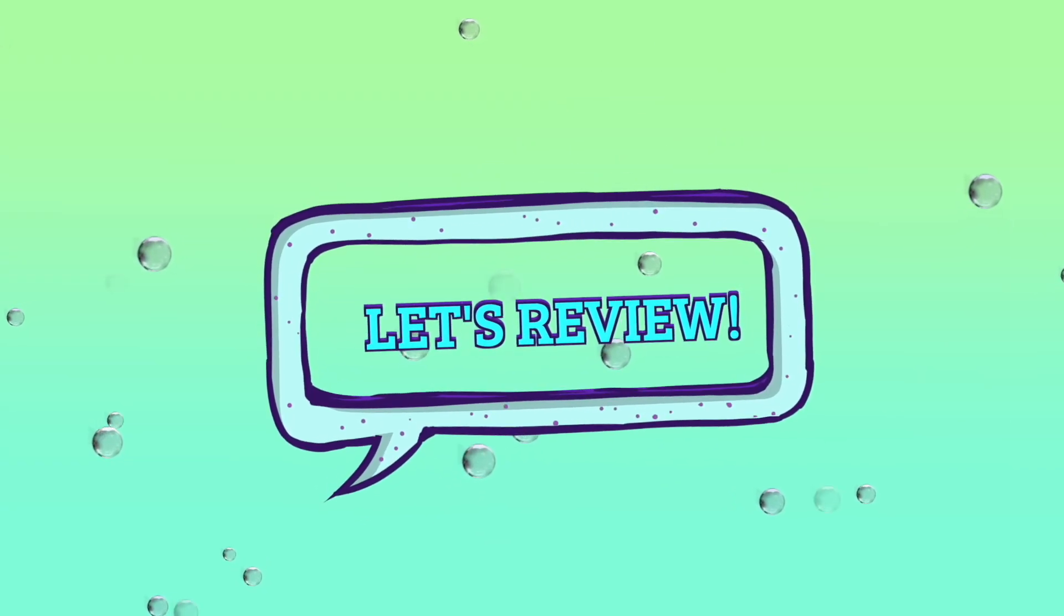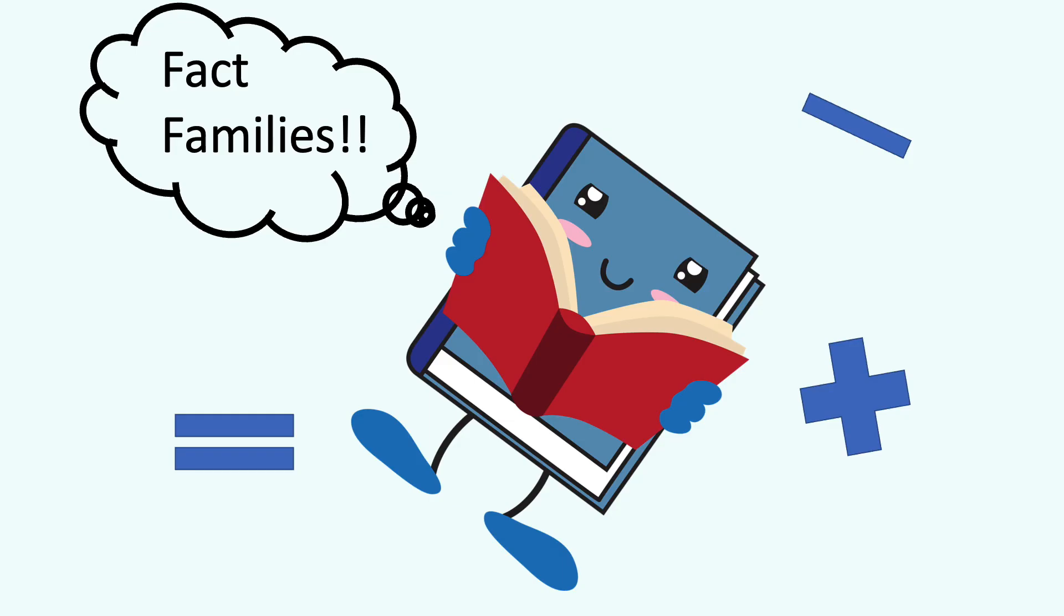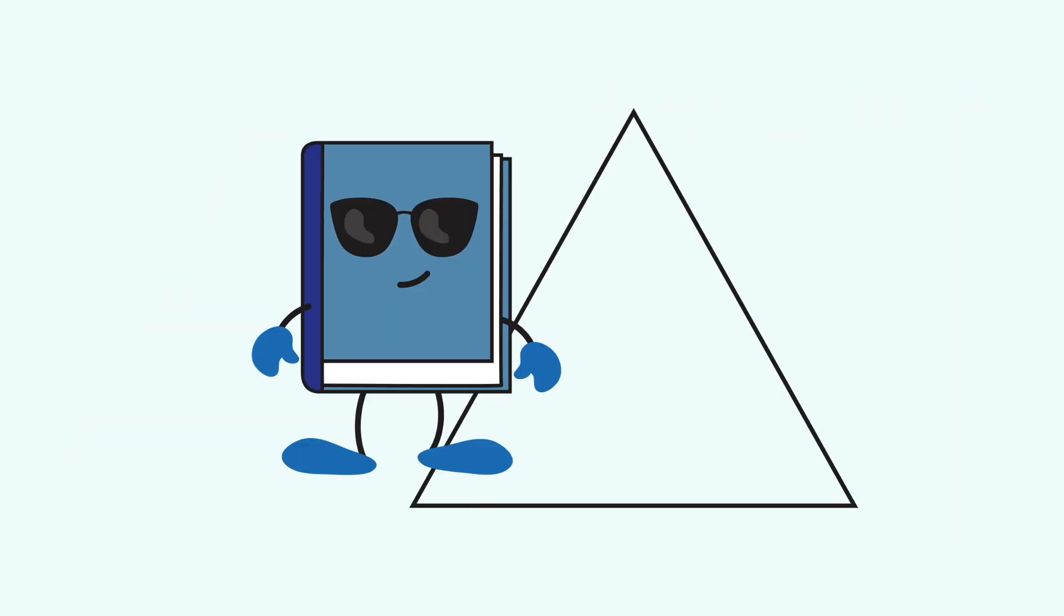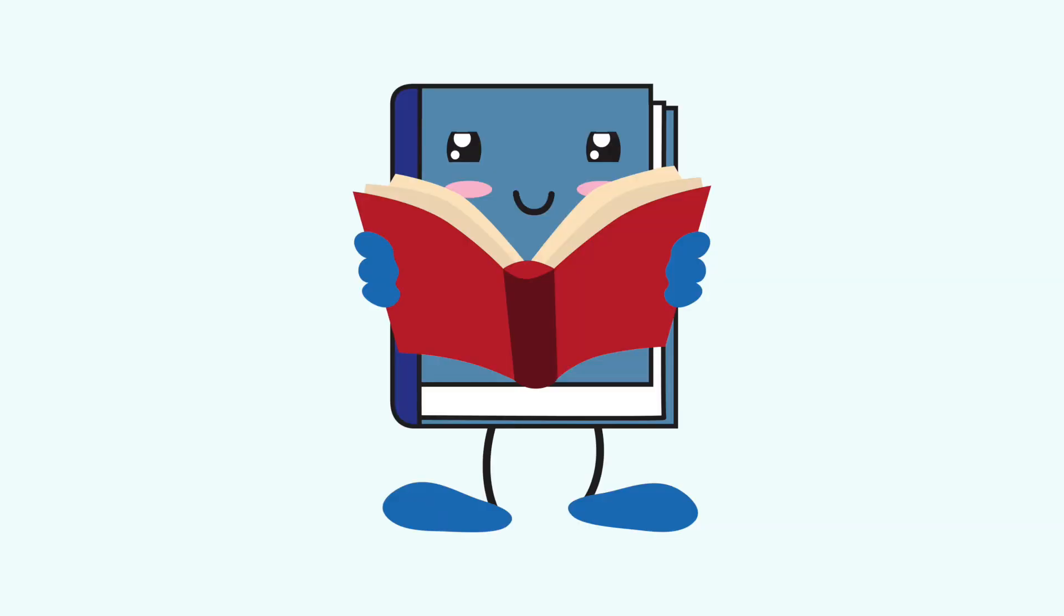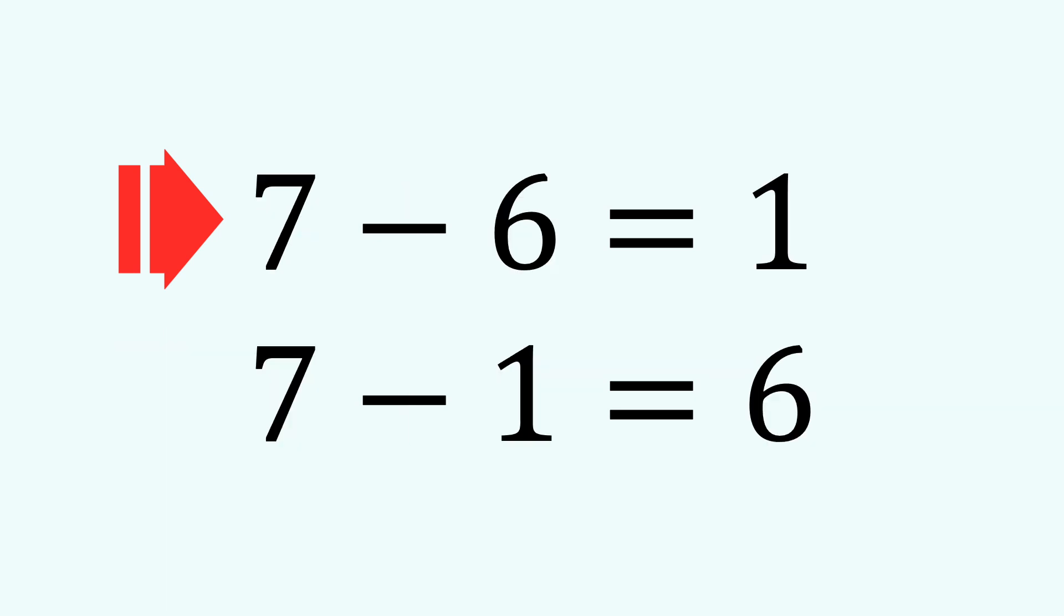Let's review what we've figured out. A fact family is a group of numbers that go together to make addition and subtraction number sentences. A fact family triangle helps us define these number sentences. And with the family 6, 1, 7, we get four number sentences: 6 plus 1 equals 7, 1 plus 6 equals 7, 7 minus 6 equals 1, 7 minus 1 equals 6.